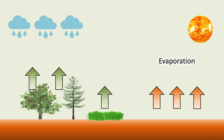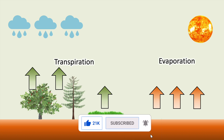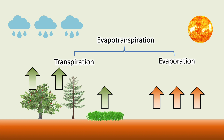This process is called transpiration. There will also be some evaporation from any water which has not actually reached the soil, as it has been intercepted by the plants themselves. Evapotranspiration is the sum of all water which is moved from the land surface to the atmosphere via evaporation and transpiration.